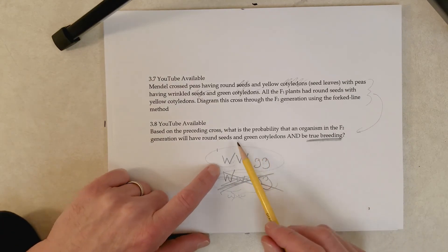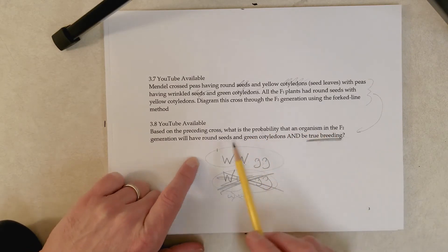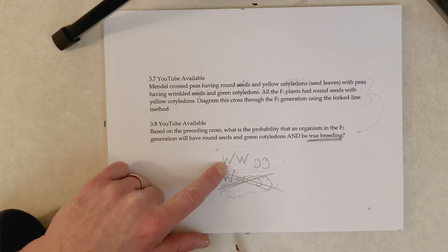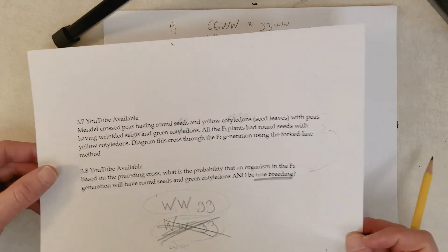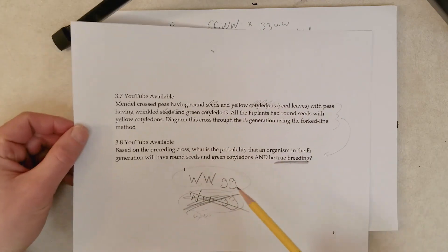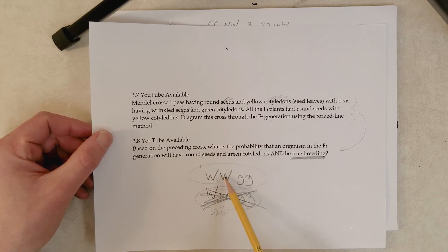So, the question is asking us, essentially, what is the probability that an organism in the F2 generation has this genotype? Two big W's, two little g's. So, to figure that out, we just need to go to our F2 genotypic ratio here and look for the ratio that has two big W's, or for the genotype that has two big W's and two little g's.